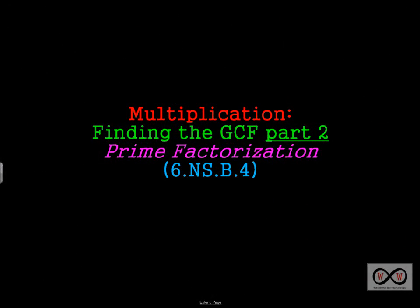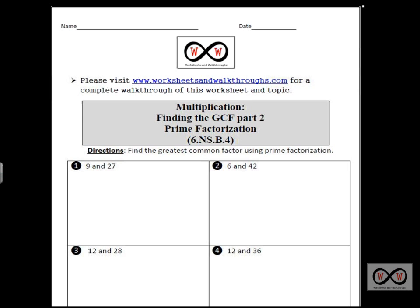In this lesson we're going to continue our study of multiplication and we'll be finding the GCF or greatest common factor. This is part 2 and we'll be using the prime factorization method. This is standard 6.NS.B.4. We'll be looking at this worksheet and you can go to worksheetsandwalkthroughs.com and print out a copy for yourself. You'll find it under our multiplication section, entitled Finding the GCF Part 2 Prime Factorization. Find the greatest common factor using prime factorization. We have four different problems.